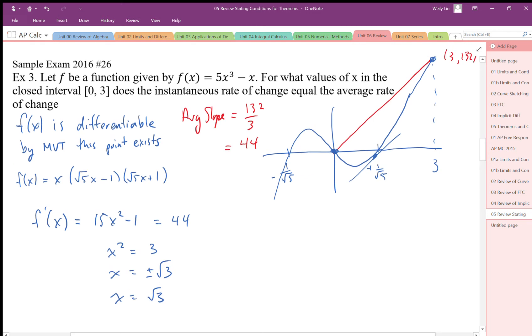An instantaneous rate of change that is equivalent. Root 3 I think is somewhere more over here. So our instantaneous rate of change is going to match our average rate of change and that's the mean value theorem.